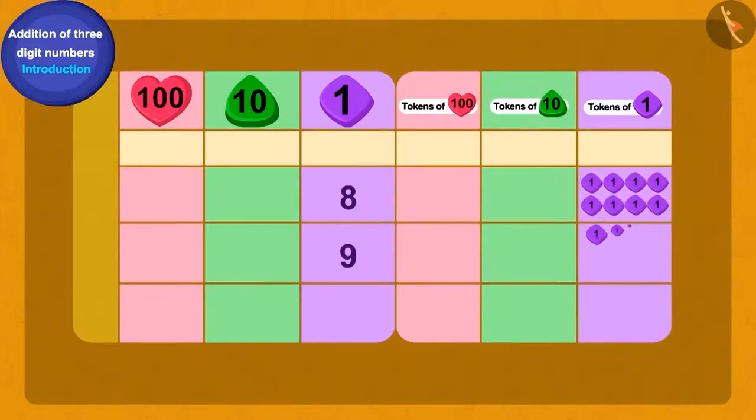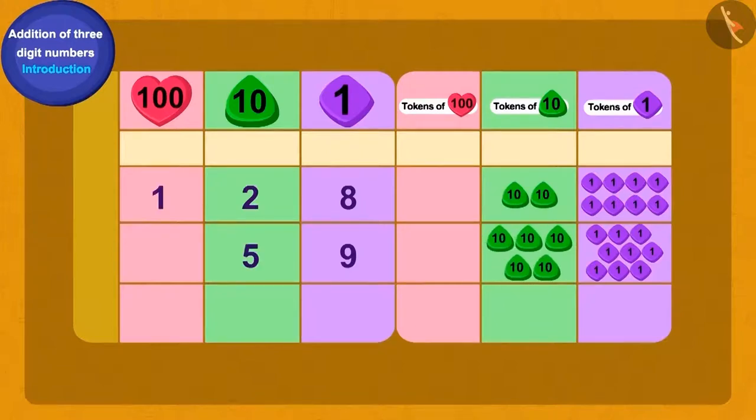Let us see how many golden eggs in total Baban has. We will add one twenty-eight and fifty-nine. First, we will write one twenty-eight and fifty-nine using tokens. Is this correct, children? We have a total of seventeen tokens of ones.